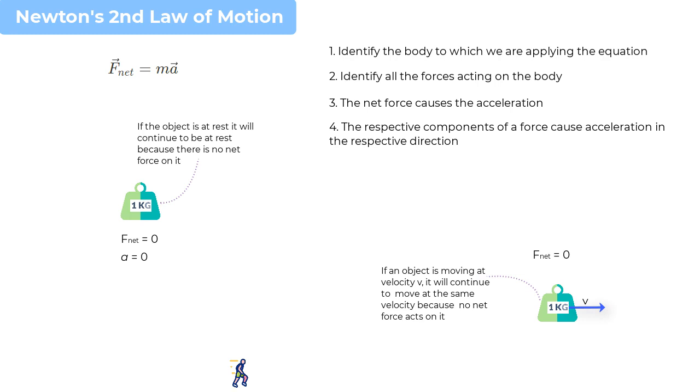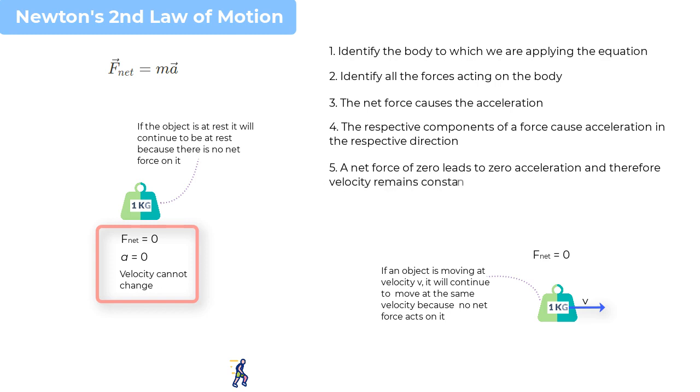And you can see that this also ties in with Newton's first law of motion, which states that an object in motion continues in its state of motion unless acted upon by an external force. So in both cases, the key is understanding that a net force of zero leads to zero acceleration, and therefore the velocity remains constant. Whether the object is at rest or in motion, the absence of a net force ensures that its state of motion remains unchanged.